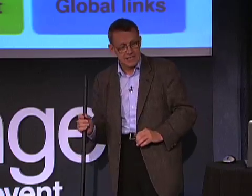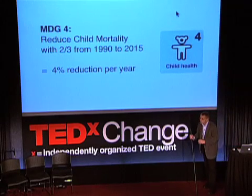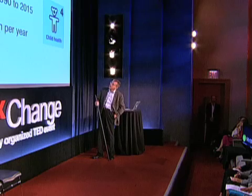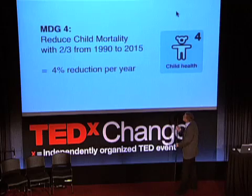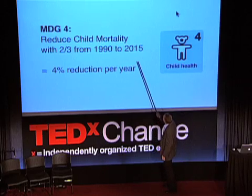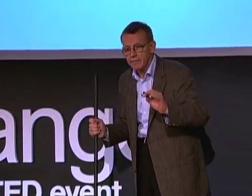There's a second reason I like these development goals, and that is because each and every one is measured. Take child mortality. The aim here is to reduce child mortality by two-thirds from 1990 to 2015. That's a four percent reduction per year. And this measuring — that's what makes the difference between political talking and really going for the important thing.